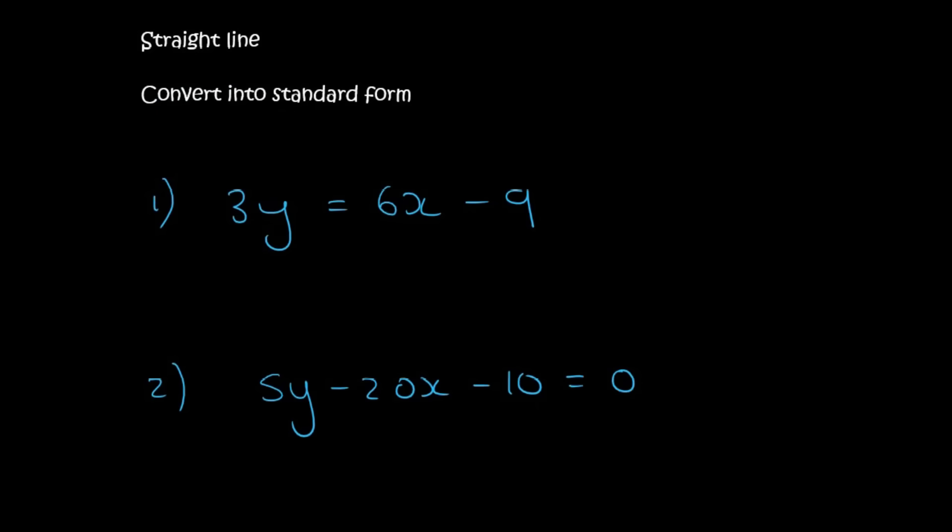Let's practice getting equations into standard form. So remember standard form looks like this. So you want the y by itself. It doesn't matter if your c or your m is switched around, but you want y by itself. So to get y by itself here, it's already on the left, so we just need to divide everything by 3. And so this would cancel, and so you would get y equals to 2x minus 3. This is called standard form.